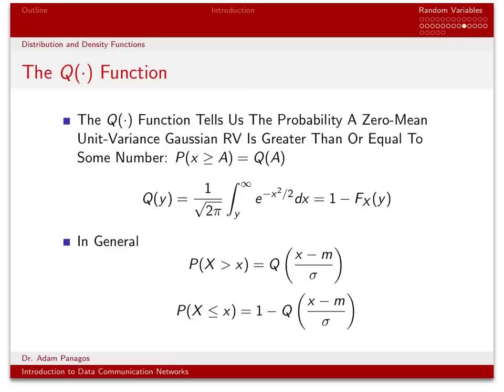The Q function and the CDF are just complements of each other. In the Q function definition, sigma equals 1 so it disappears, sigma squared equals 1 so it disappears, and m equals 0 so x minus m becomes just x squared. For a 0-mean unit-variance Gaussian, to find the probability of being greater than a number, query the Q function, or query the CDF and compute 1 minus the result.